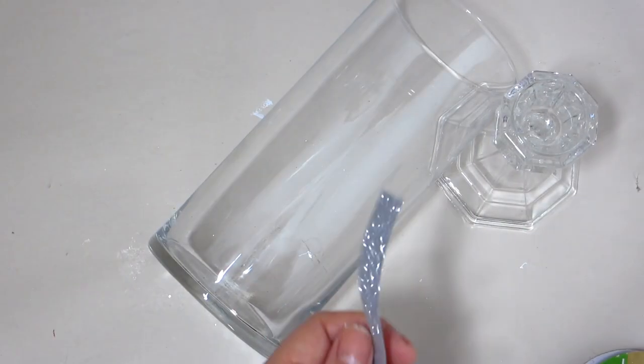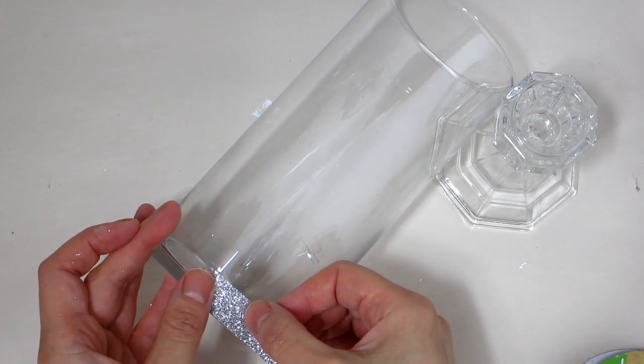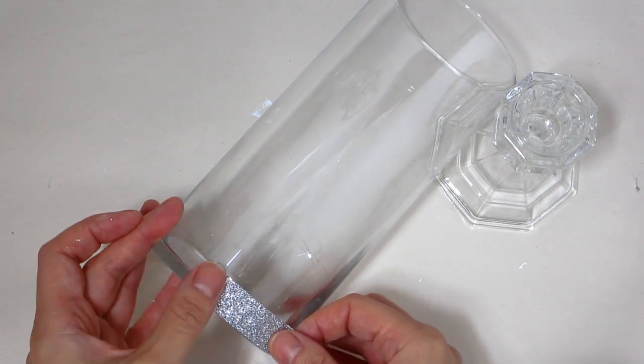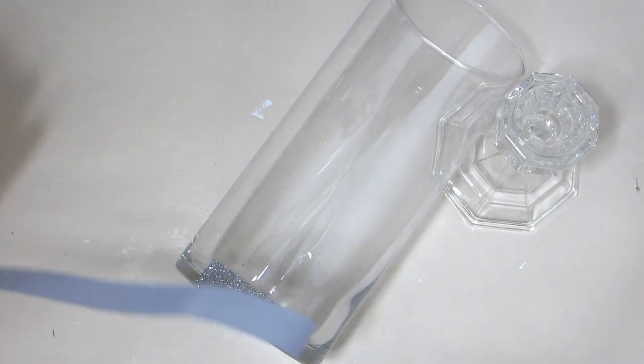For our third apothecary jar we will be embellishing a cylindrical glass vase using some silver glitter ribbon and adhering it with some clear tacky glue and hot glue around the bottom of the jar.